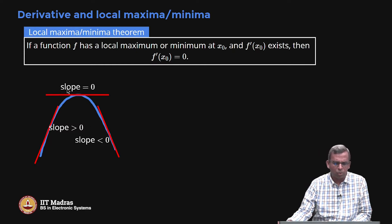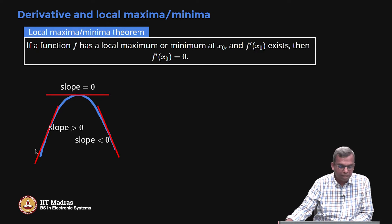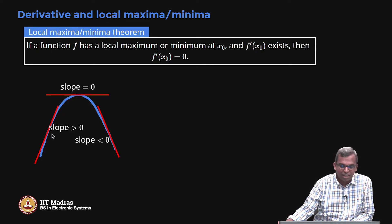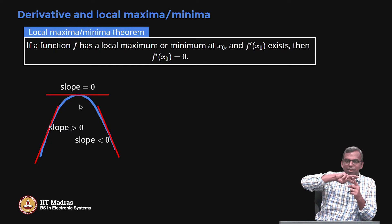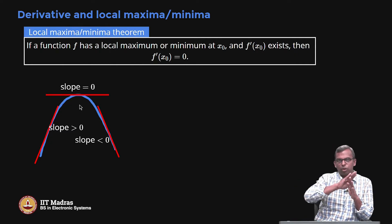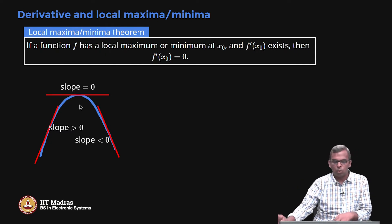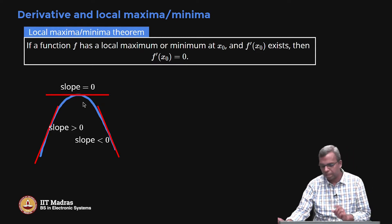Here is a picture to illustrate why this is true. To the left of a local maxima, the function has to be increasing — the slope is greater than 0. It increases, hits the peak, and then falls. At the top-most point the slope becomes equal to 0. After crossing the peak, the tangent line faces downward and slope becomes negative. So the slope must be equal to 0 at the maximum.